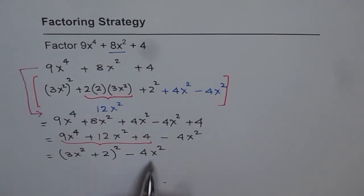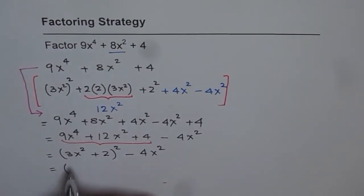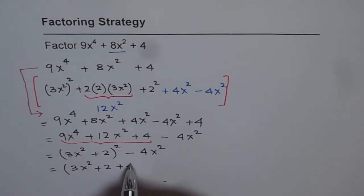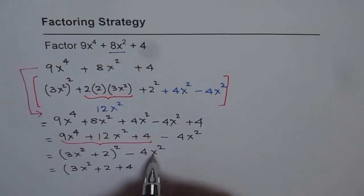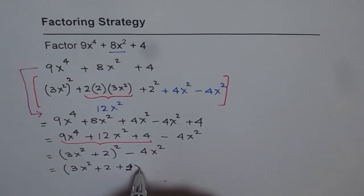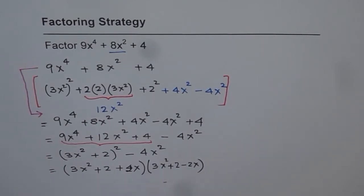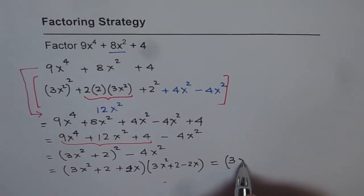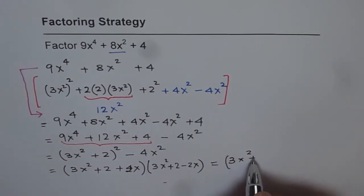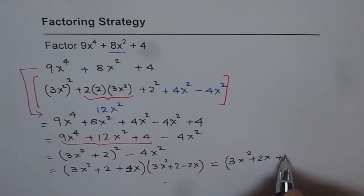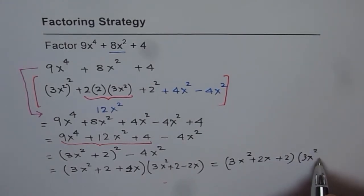And we can write this as equals to 3x squared plus 2, whole squared, minus 4x squared. Now we can apply difference of squares and factor it. So we write this as 3x squared plus 2 plus 2x, times 3x squared plus 2 minus 2x. Rearranging, the final answer is 3x squared plus 2x plus 2, times 3x squared minus 2x plus 2.